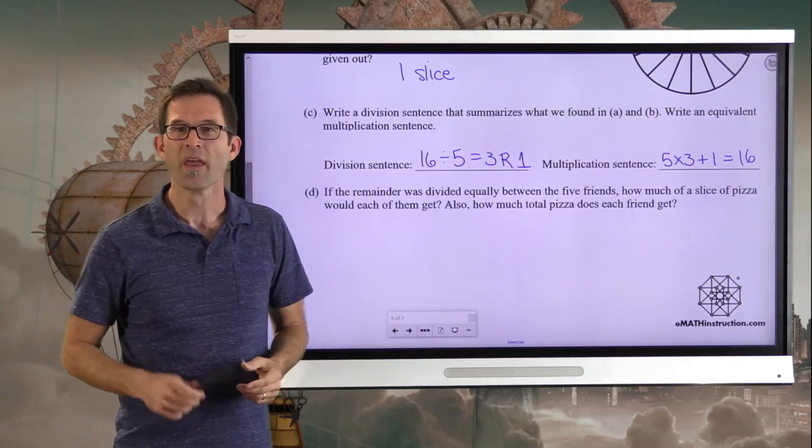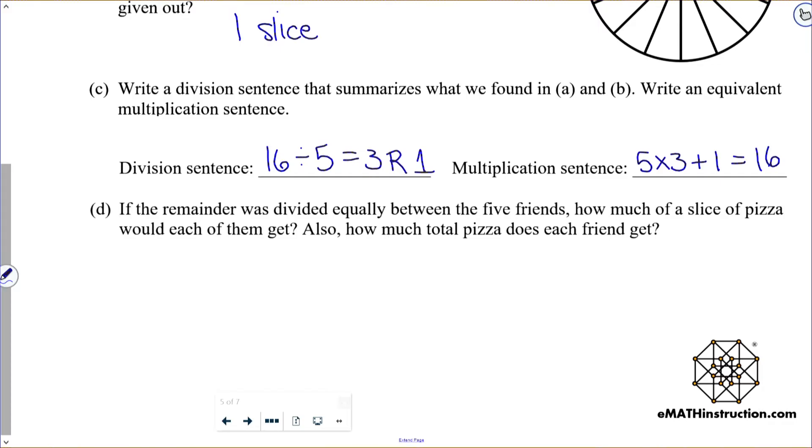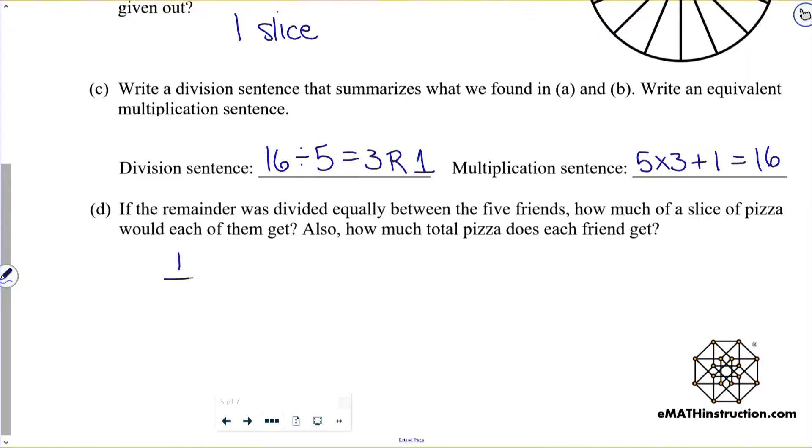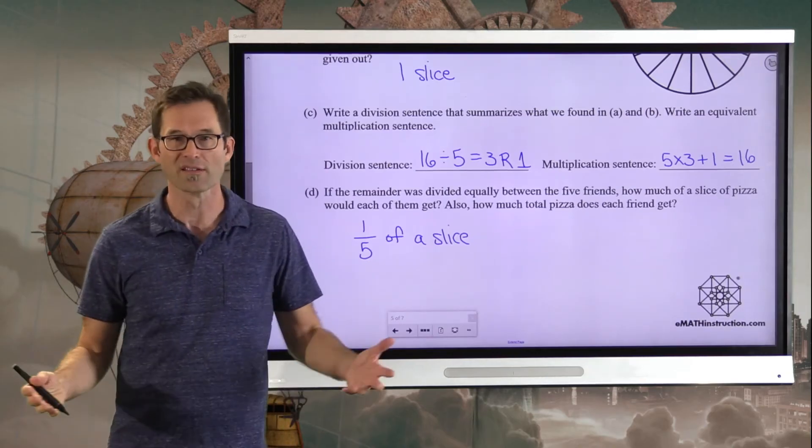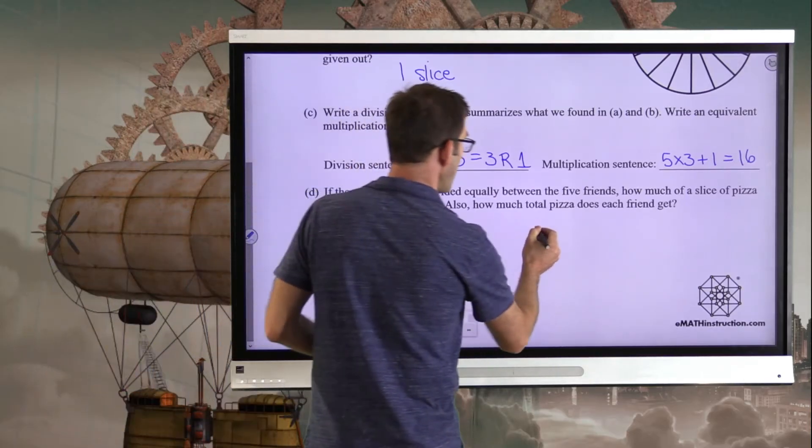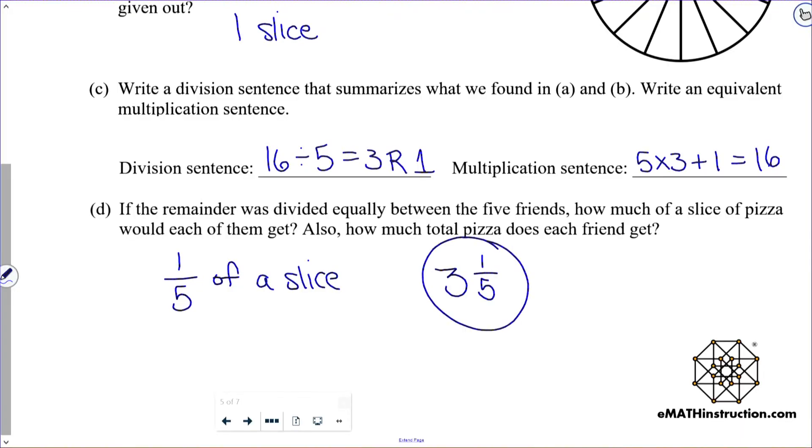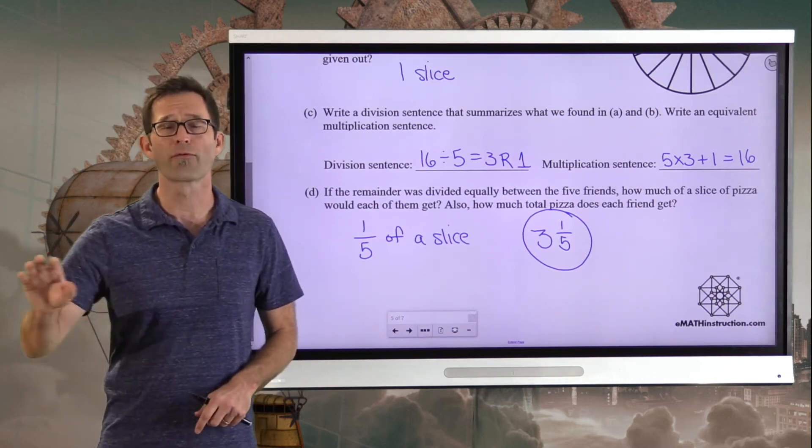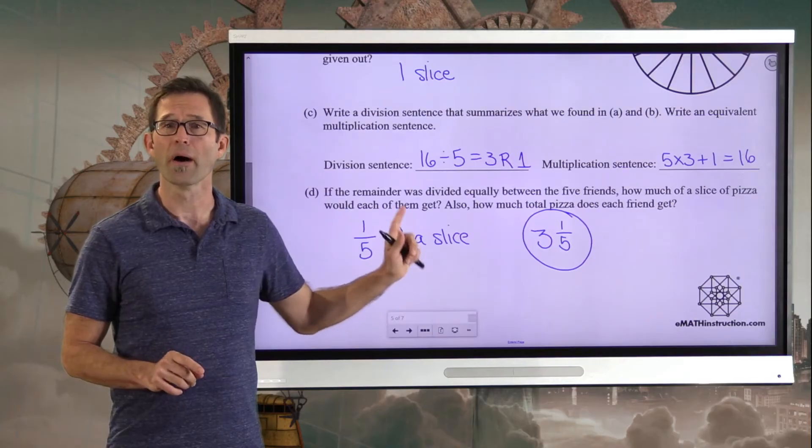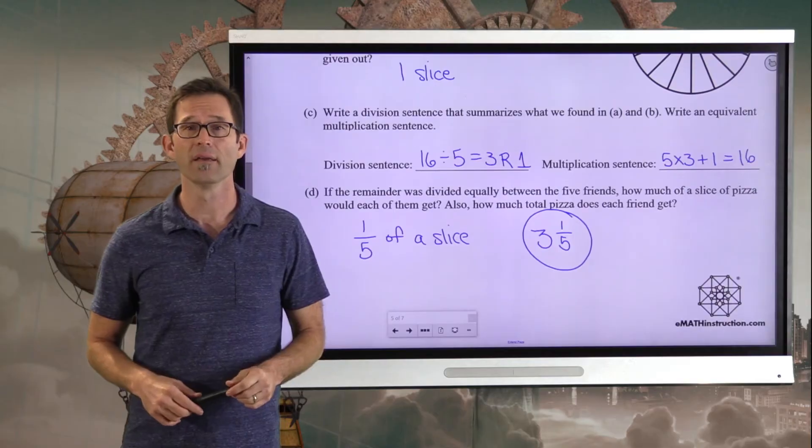Now, how would I put that in terms of multiplication? In terms of multiplication, what I would say is I would say that five times three plus an additional one would be equal to 16. There we go. So this is kind of the whole number part, and this is our remainder. Now, letter D, just a little fraction work here. If the remainder, that remainder of one slice was divided equally between five friends, how much of a slice of pizza would each of them get? Also, how much total pizza would each friend get? Well, I mean, there's only one piece remaining, and if it was divided evenly amongst all five of the friends, they would each get one fifth of a slice. It would be a pretty thin slice. Because it would be one fifth of a slice of pizza. But in total, what the friends would get is they'd get those three slices and an additional one fifth of a slice.